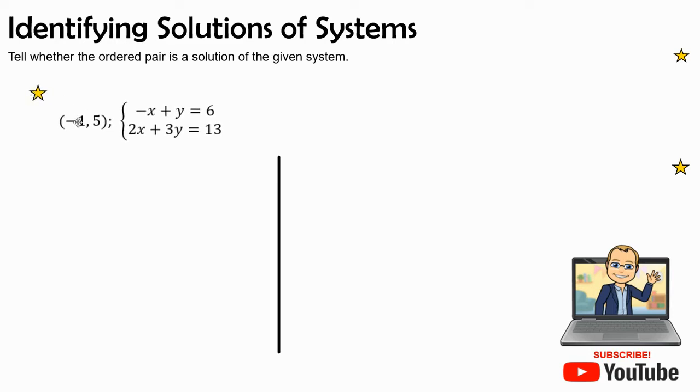Here's the next one. The point is (-1, 5). So I'm going to label my x variable and my y variable. And then I have negative x plus y equals 6. And the second equation is 2x plus 3y equals 13.